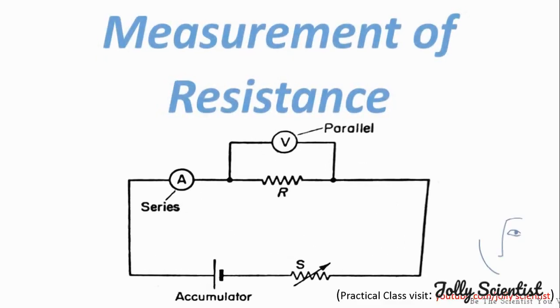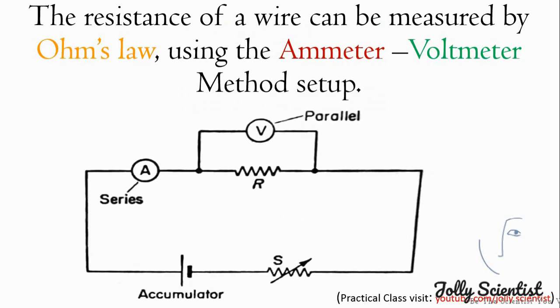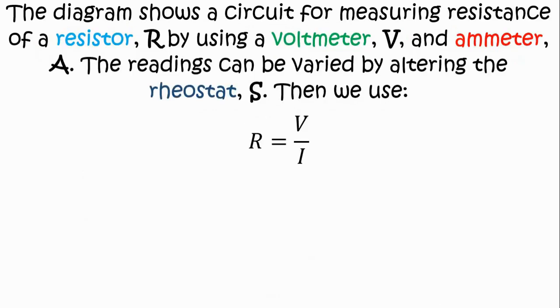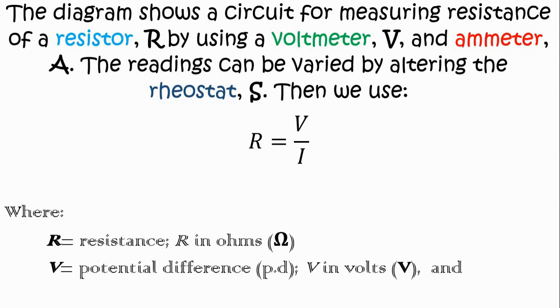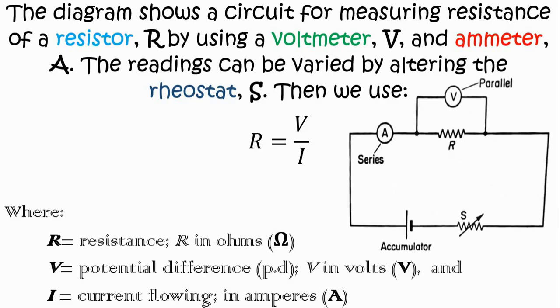Measurement of resistance. The resistance of a wire can be measured by Ohm's law using the voltmeter and ammeter method. The diagram shows a circuit for measuring resistance of a resistor R by using a voltmeter V and an ammeter A. The readings can be varied by altering the degree of the rheostat S. Then we use R equals V over I, where R is the resistance in ohms, V is the potential difference in volts, and I is the current flowing in amperes.